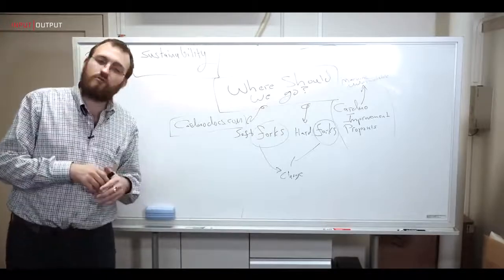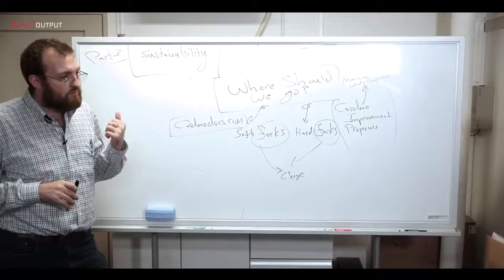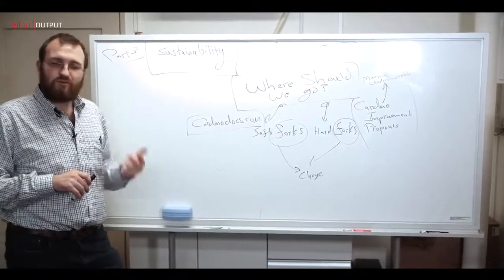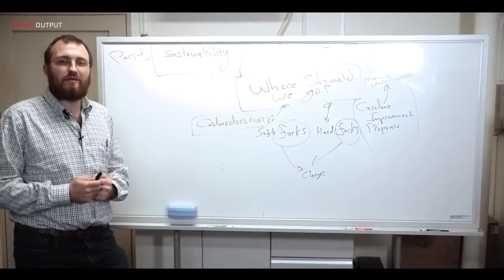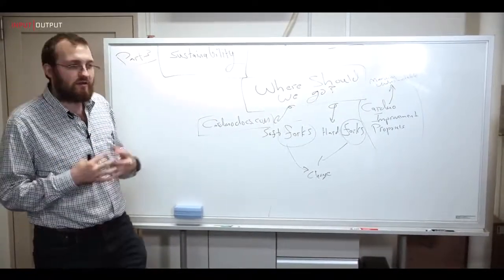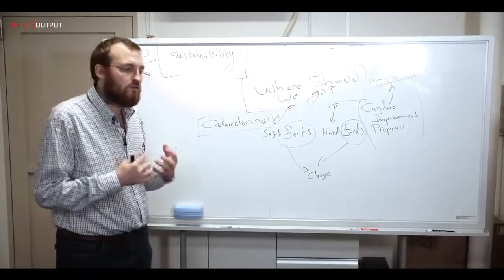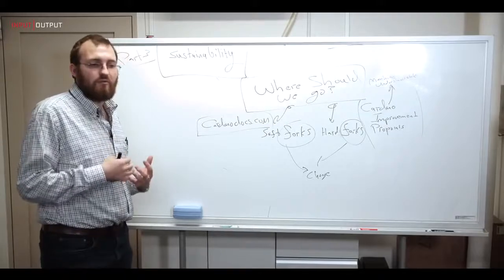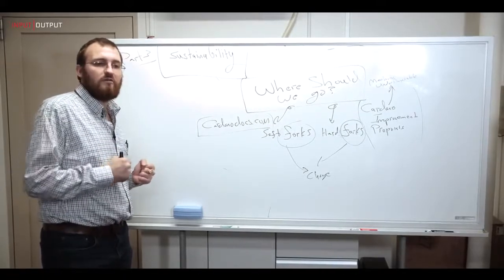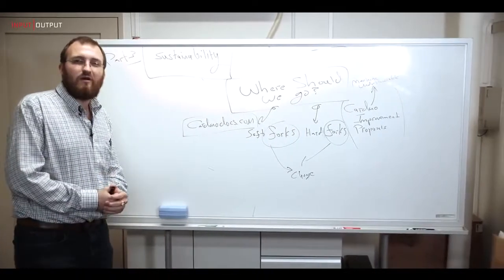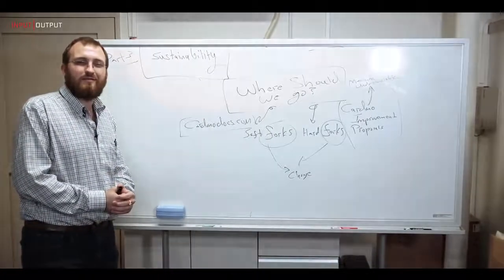So that's Cardano. Cardano is a third generation protocol. It's built with peer review. It's built with high assurance software standards. It's built in Haskell. It's built by a large international team and we're very well funded. It's built to be sustainable, interoperable and scalable. Our view of how do we get cryptocurrencies from the first million to the first billion. Thank you so much for watching and I hope to hear from you guys soon.